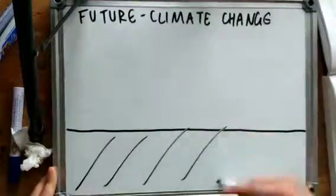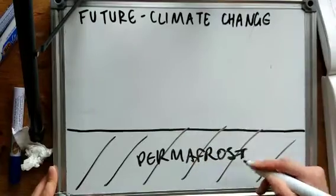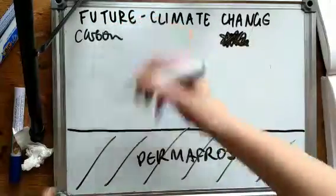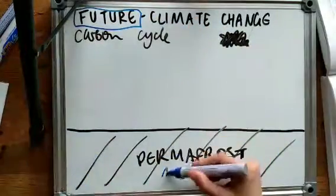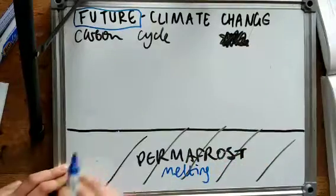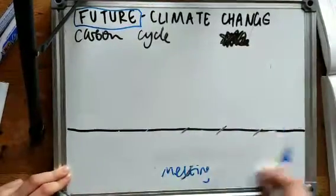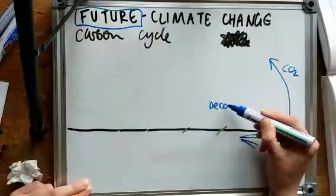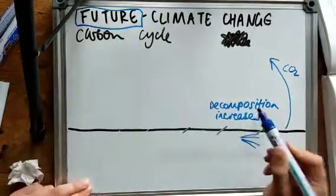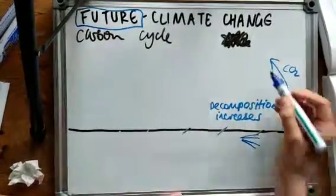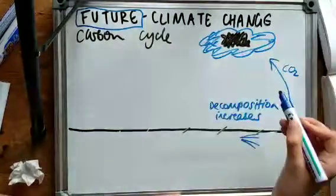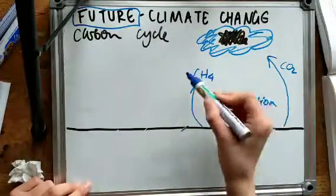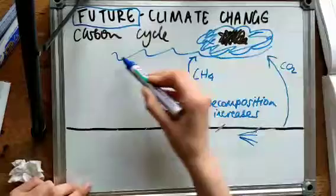So climate change is having an impact on the carbon cycle and water cycle in the tundra. So warming results in permafrost melting, and permafrost is a really large store of carbon in the tundra, but it can also become a source of carbon through decomposition. So decomposition increases, which releases carbon dioxide, which increases the atmospheric store of carbon.